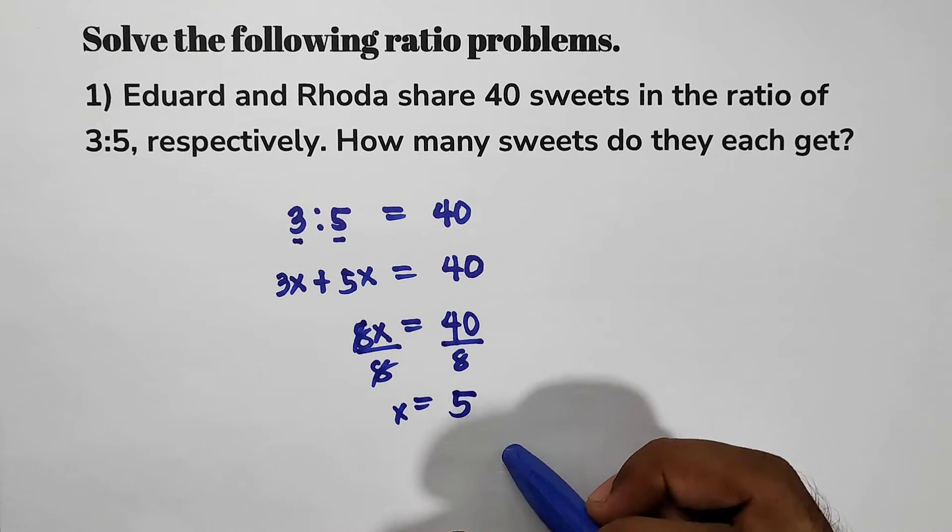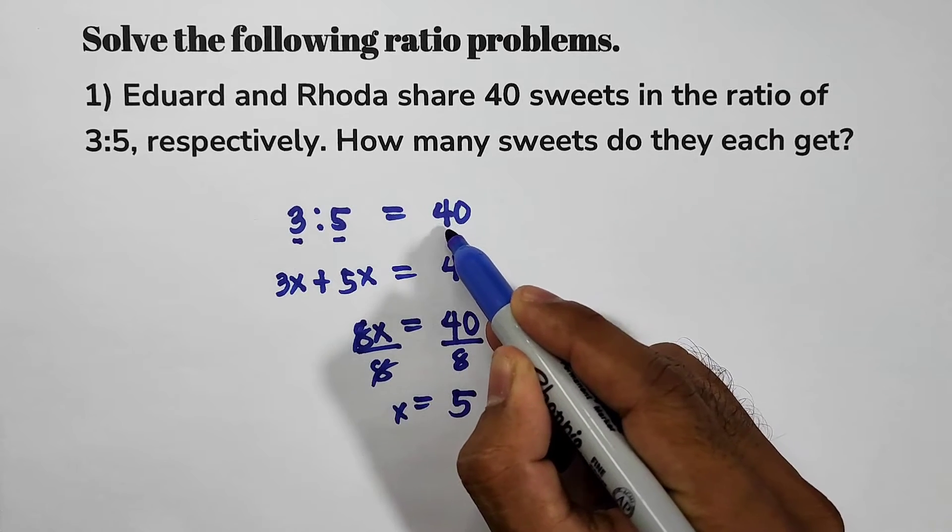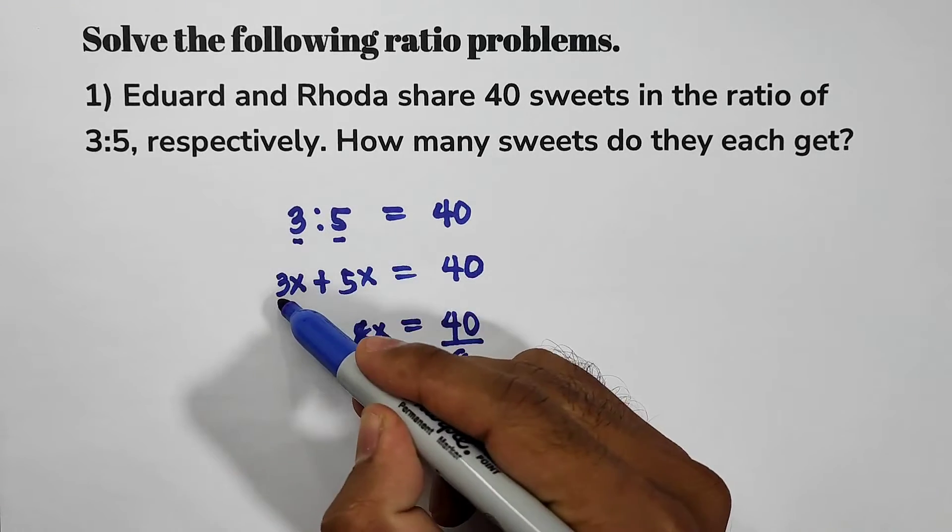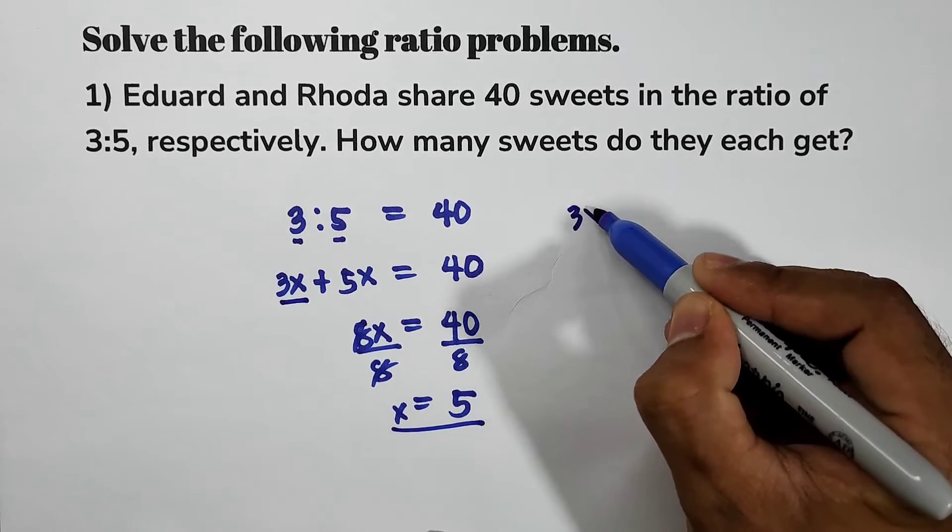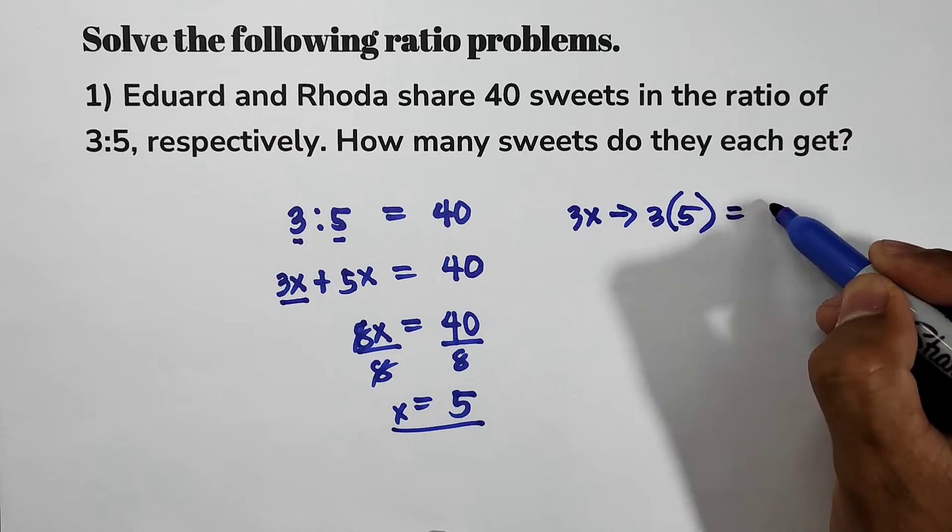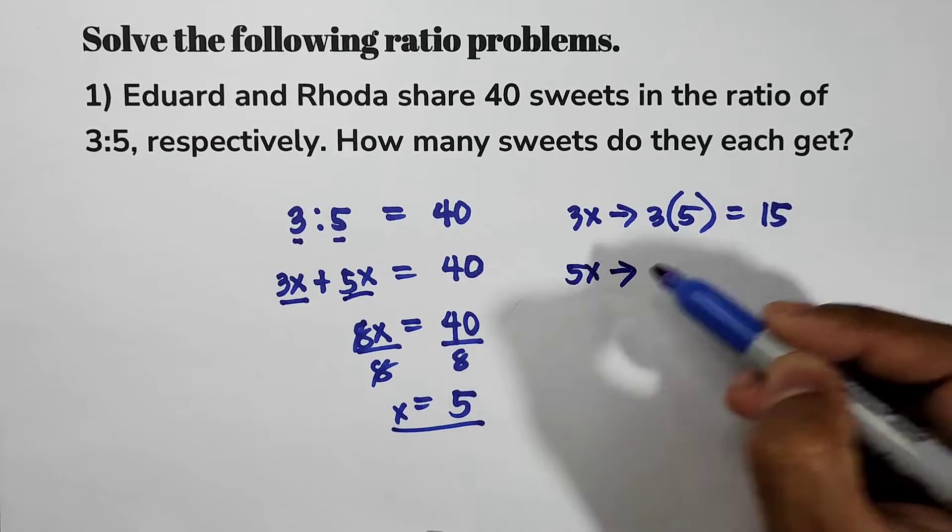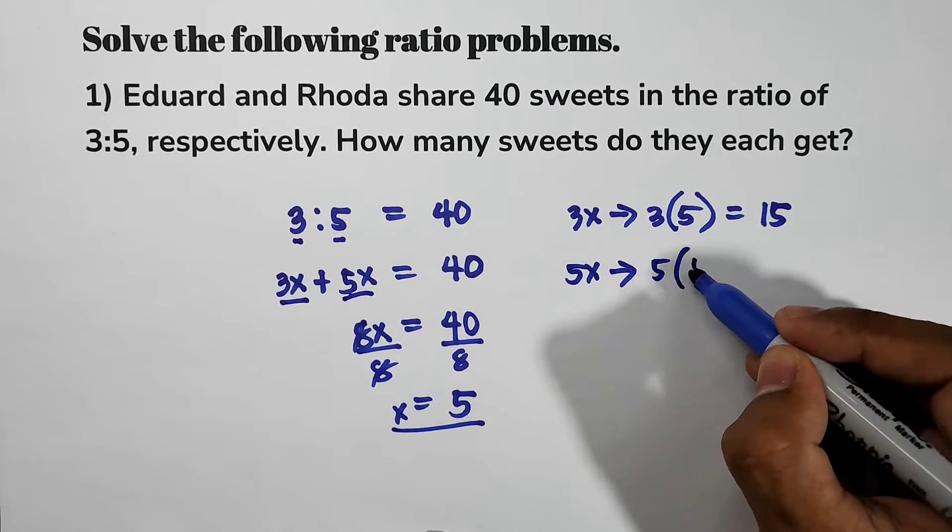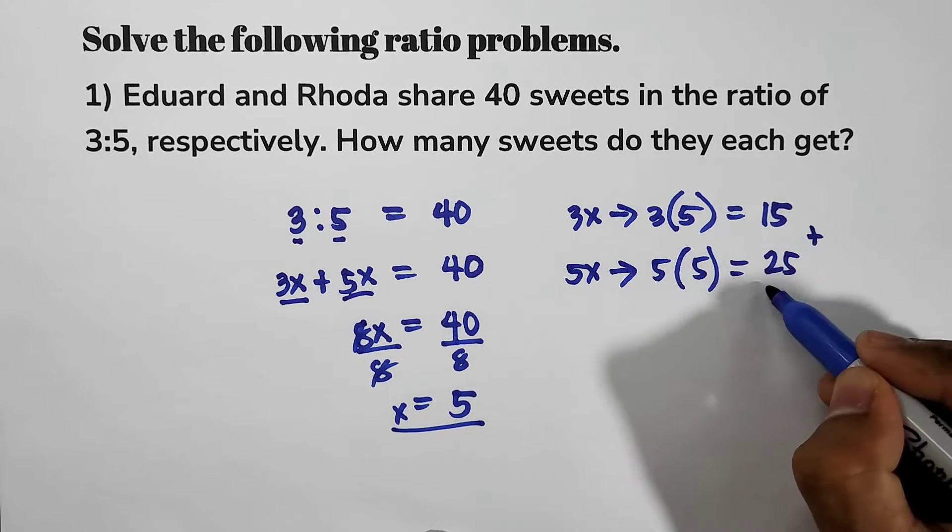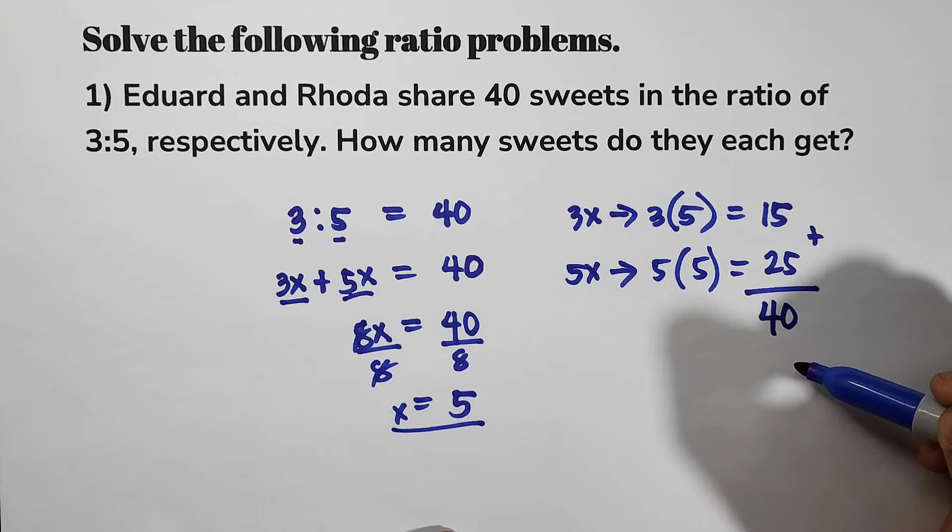Now, let us have the ratio 3 is to 5 and then divide it into 40, which is the value of x equal to 5. Now, 3 is 3x, so 3x, that is 3 times 5, so that is equal to 15. And then 5x, so 5 times 5, that is equal to 25. And if we are going to add this, that is equal to 40. 15 plus 25 is equal to 40.